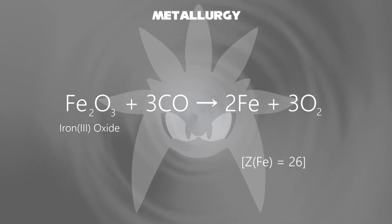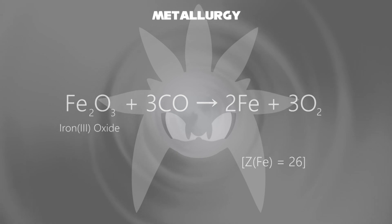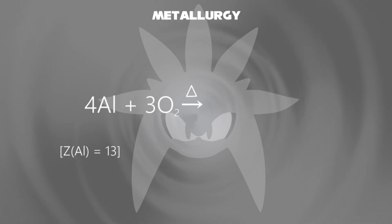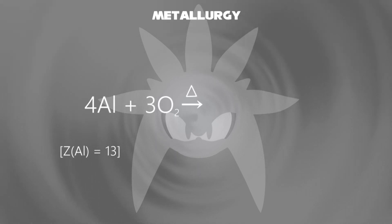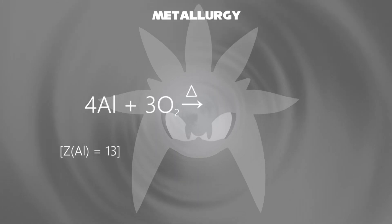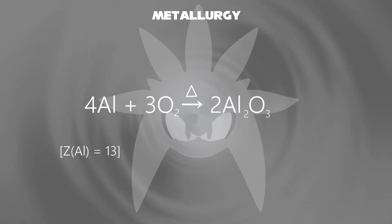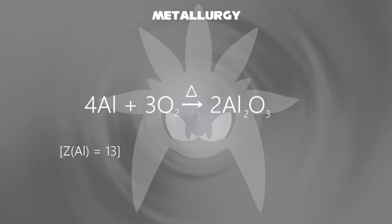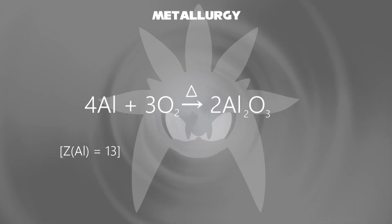Yeah, you know the atomic number of metals? Let's consider aluminium — the atomic number is 13. When we react it with oxygen, it transforms into aluminium oxide under the influence of heat. So yeah, I proved that. That was a great discussion; we talked about metallurgy.